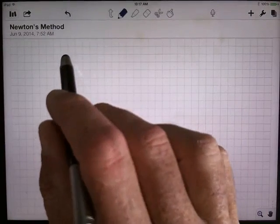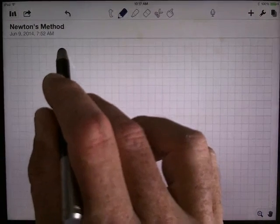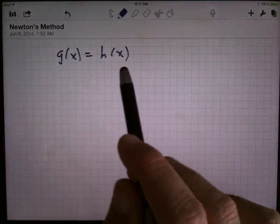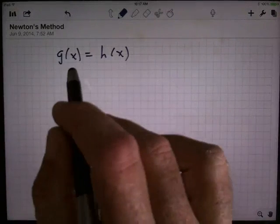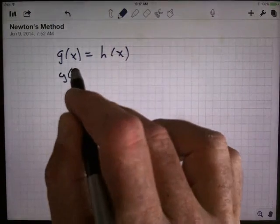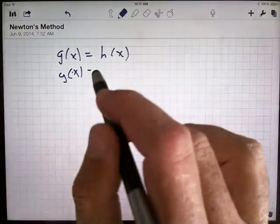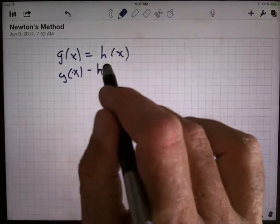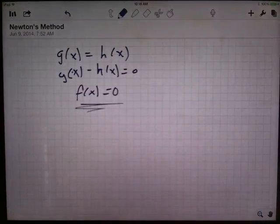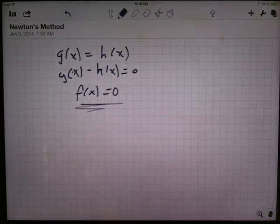So you've got any equation. Whatever equation you have, you've got some function of x on one side equals some other function of x on the other side, and you're trying to find the x that makes it true. But what I really want to do is get everything on one side of the equation. So g of x minus h of x equals zero, which I'm just going to say looks like f of x equals zero. If you have any other kind of equation, subtract everything over to one side and you've got this. This is what Newton's method is going to apply to.